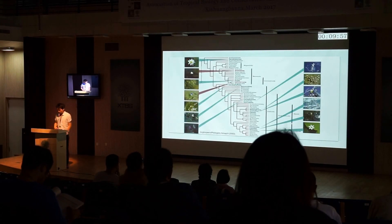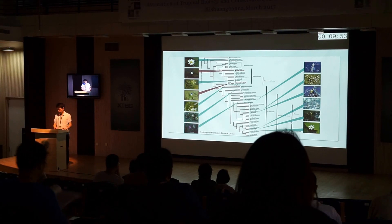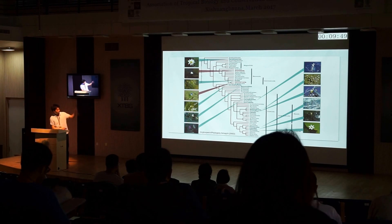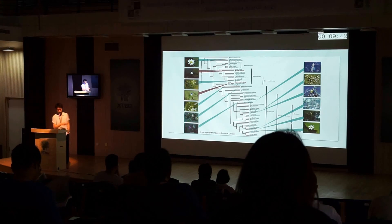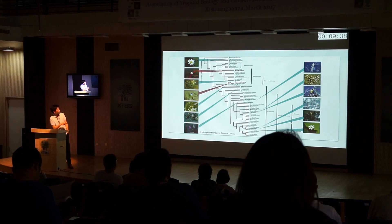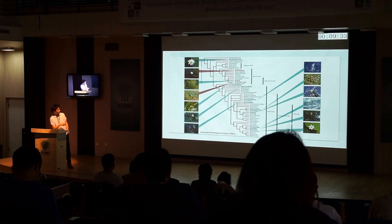Since I was a university student, I've been working on aquatic and wetland plant groups. As you can see, aquatic and wetland plants appeared multiple times independently in the phylogenetic evolution of angiosperms. Today I'm going to talk about two genera: one is Ottelia of Hydrocharitaceae in Alismatales, and the other is Monochoria of Pontederiaceae in Commelinales.